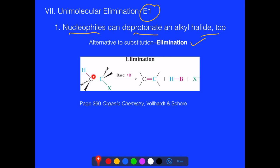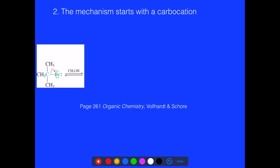Overall, elimination looks like this: we have our substrate with a carbon-halogen group and a hydrogen on an adjacent carbon. A strong base ends up removing a hydrogen after the halogen goes away, and we end up with a carbon-carbon double bond product — an alkene — along with the base that removed the hydrogen and our leaving group. This is the elimination reaction overall.